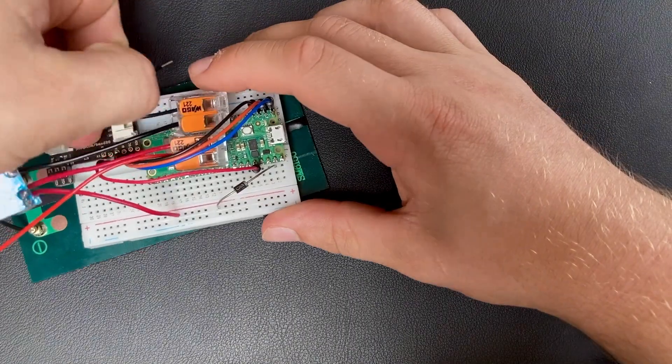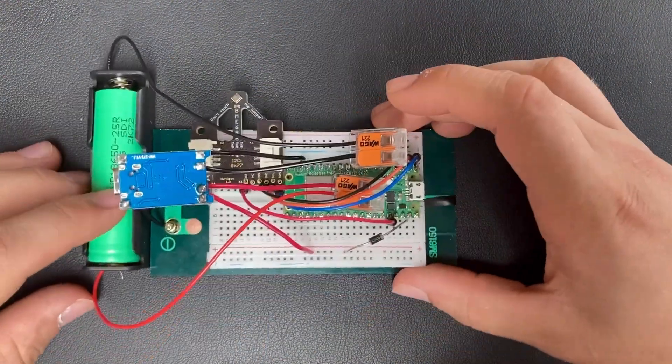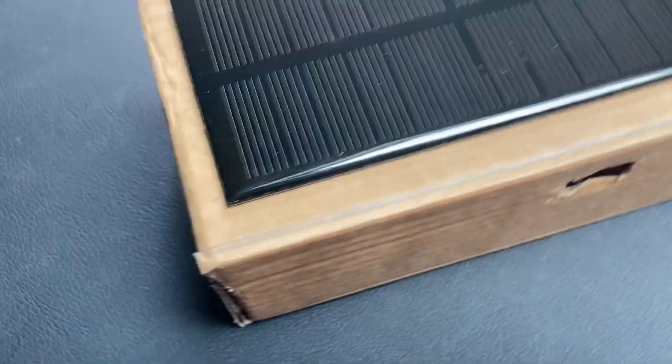Now all that's left to do is to connect the positive power output to the Schottky diode and the negative power output to a ground pin of the Pico W. And with that, the circuit is complete and we can put everything into a protective housing.